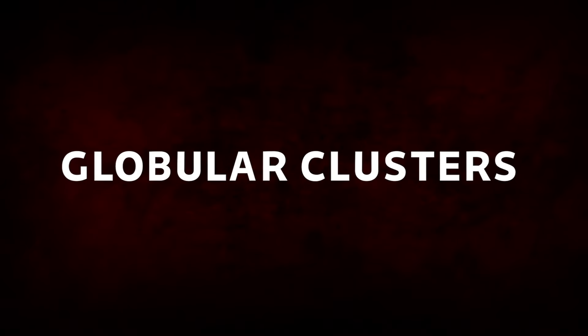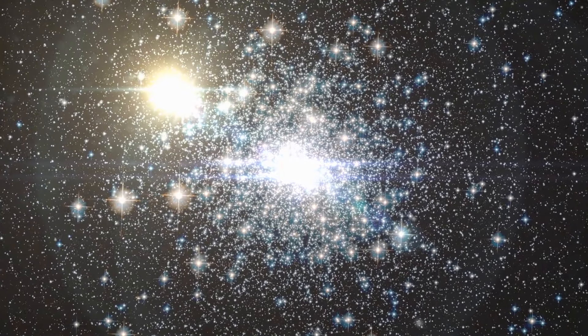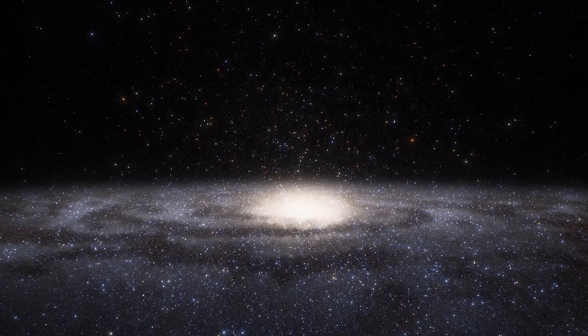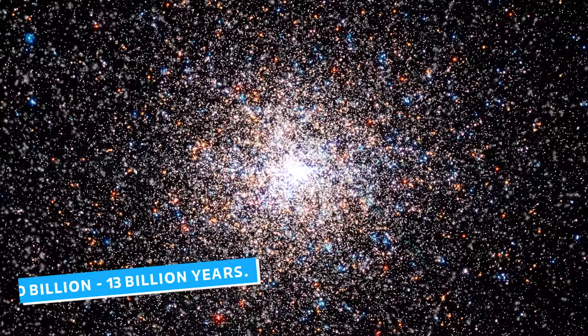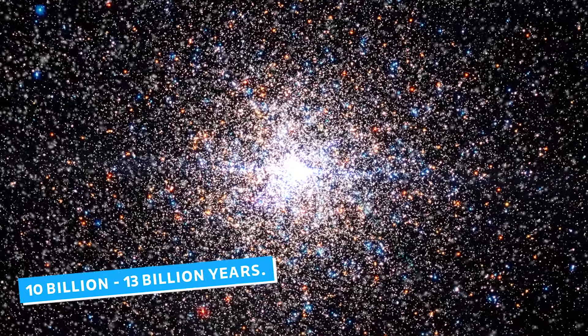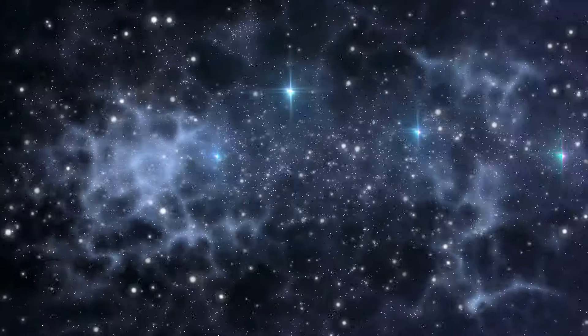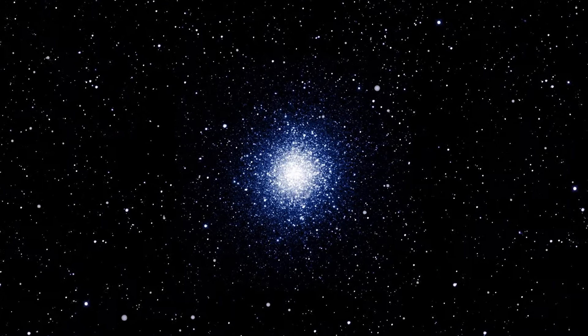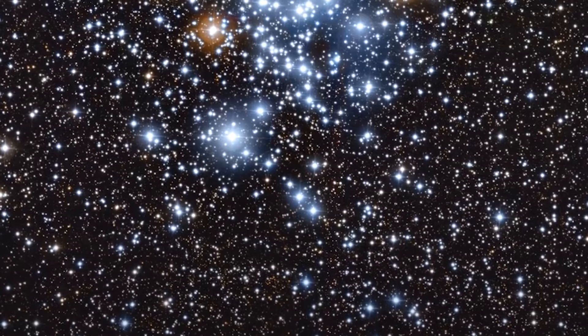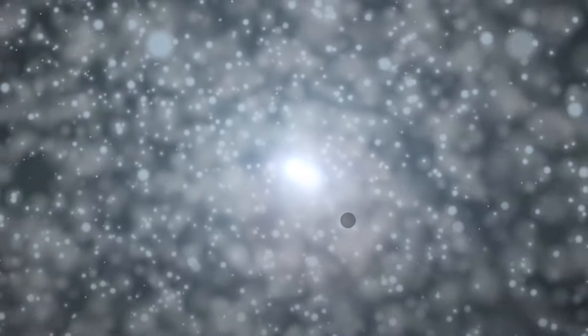Globular Clusters. Globular Clusters are dense, spherical collections of stars that orbit around the centers of galaxies, like the Andromeda Galaxy. The age of the stars within globular clusters range from around 10 billion to over 13 billion years. This makes globular clusters some of the oldest objects in the universe. These clusters typically contain tens of thousands to hundreds of thousands of stars, densely packed into a relatively small volume of space. These stars are tightly bound together by their mutual gravitational attraction, giving globular clusters their spherical shape.